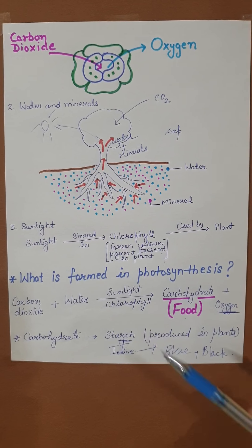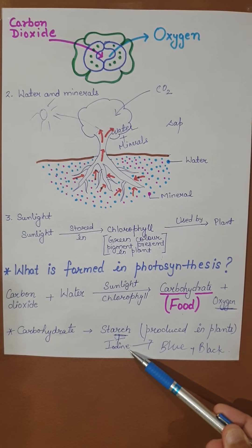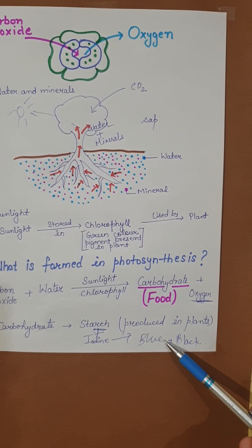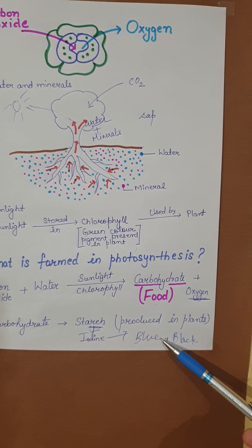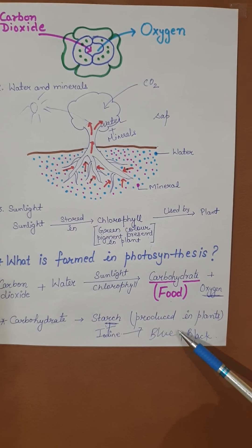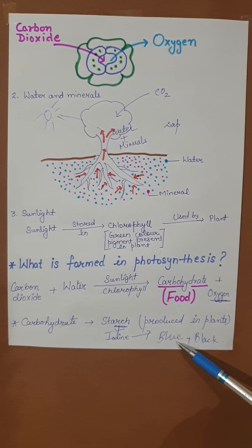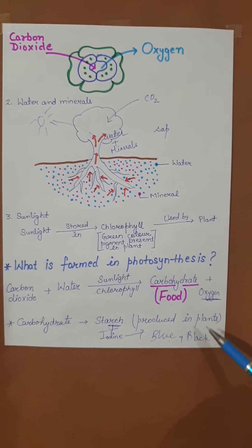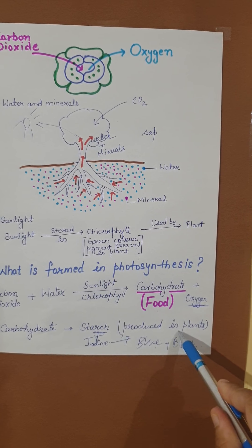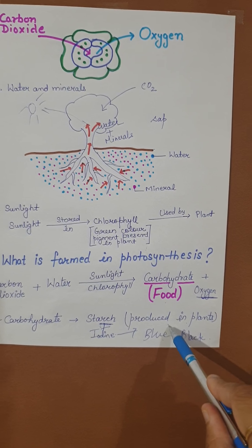As you have already studied in class 6, starch when reacts with iodine, it will form a blue-black color that confirms the presence of starch. Starch is basically the stored food material, or you can say the food which is produced by plants and stored by plants.